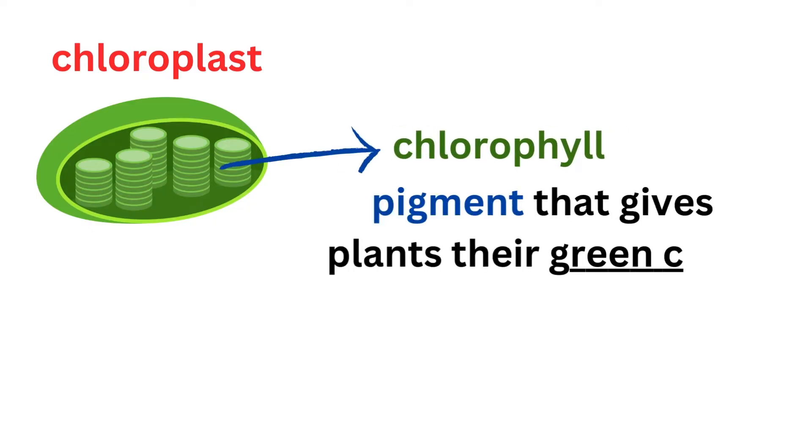Inside the chloroplasts is a special pigment called chlorophyll. Chlorophyll is what gives plants their green color, and it's also what captures sunlight, making it possible for the plant to convert energy from the sun into food.